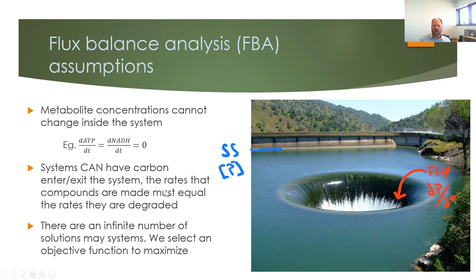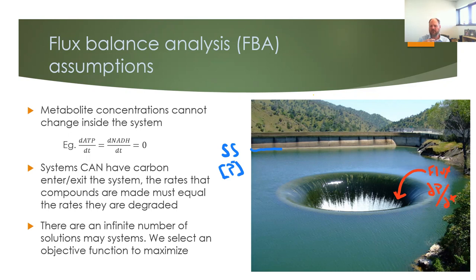FBA also assumes that carbon enters and exits a system, but using the FBA approach, those rates have to be equivalent to each other — otherwise it would result in accumulation of biomass. The third thing to keep in mind is that there are an infinite number of solutions to FBA problems. We deal with that by defining boundaries around allowable fluxes and then defining a particular target objective for calculations, called the objective function.